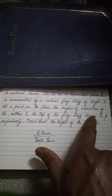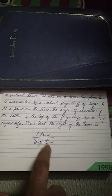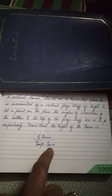the angles of elevation of the bottom and the top of the flagstaff are alpha and beta respectively. Prove that the height of the tower is h tan alpha divided by tan beta minus tan alpha. So this is the question.